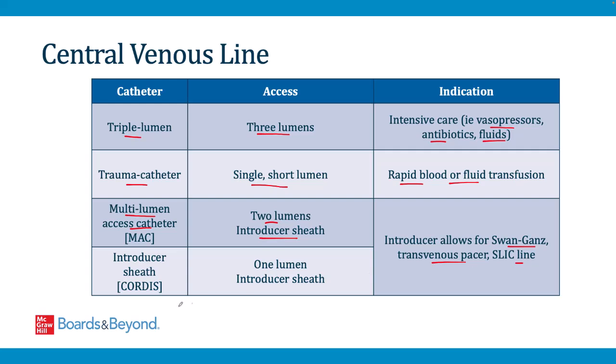A cordis is another central line with a single lumen and an introducer sheath. These lines all differ in catheter thickness and lumen types, but they can all be placed to obtain central intravenous access.